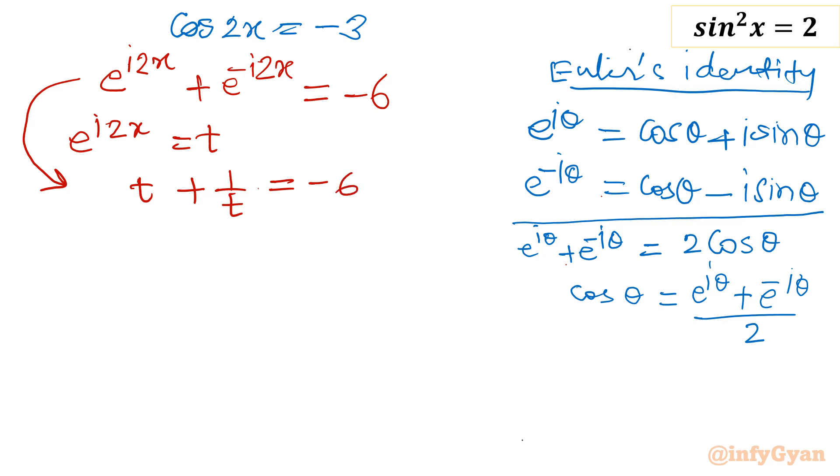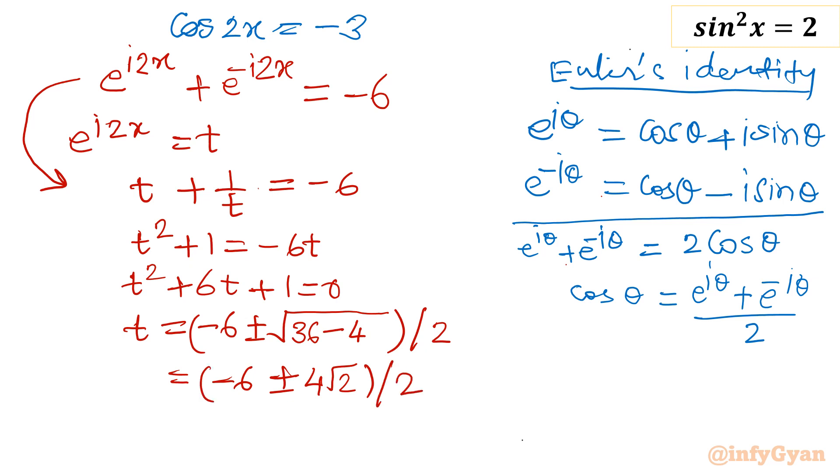Multiply both sides by t. So t square plus 1 equal to minus 6t. Take all the terms to the left. t square plus 6t plus 1 equal to 0. Let me solve this equation. This is a quadratic equation in t. I will use the quadratic formula, that is minus b. So I will write minus 6 plus minus square root of b square, so 36 minus 4ac. a and c both values are 1, so 4 divided by 2. Next step I will write minus 6 plus minus root 32, which is 16 times 2, so 4 root 2 divided by 2. So I will get minus 3 plus minus 2 root 2.